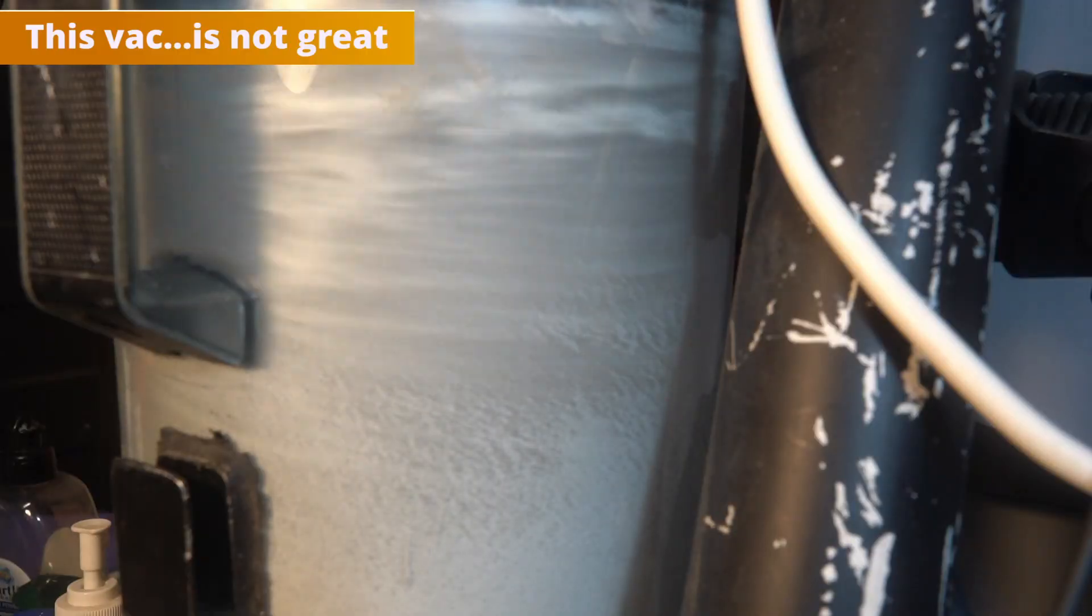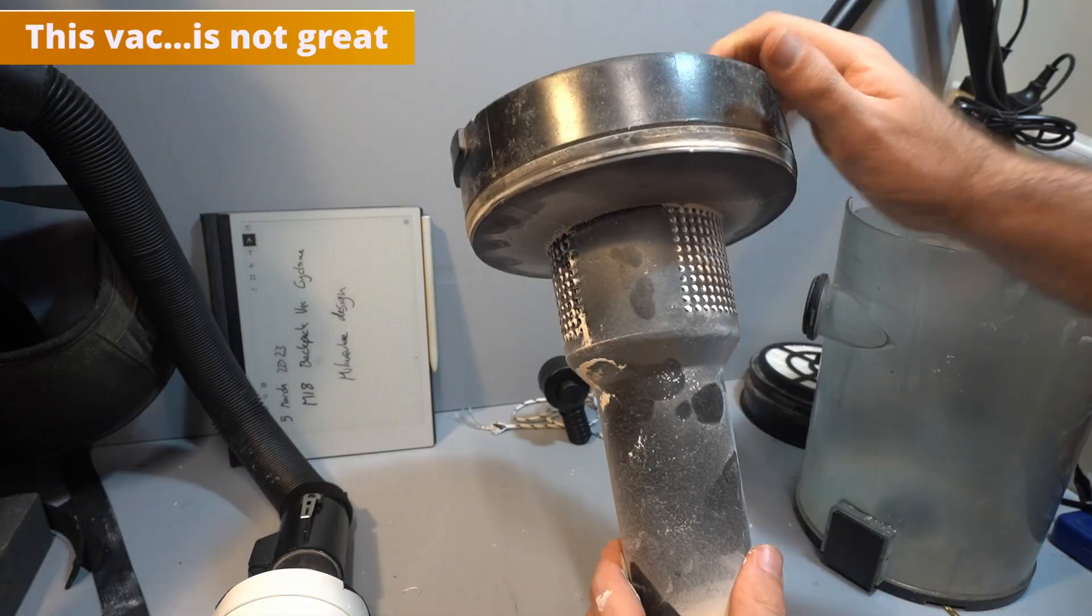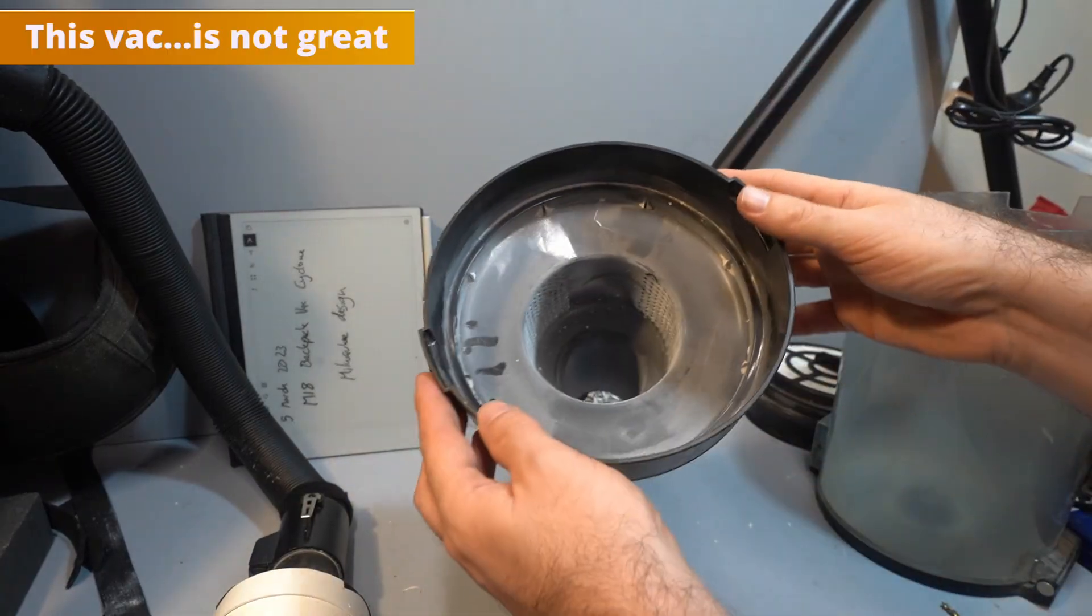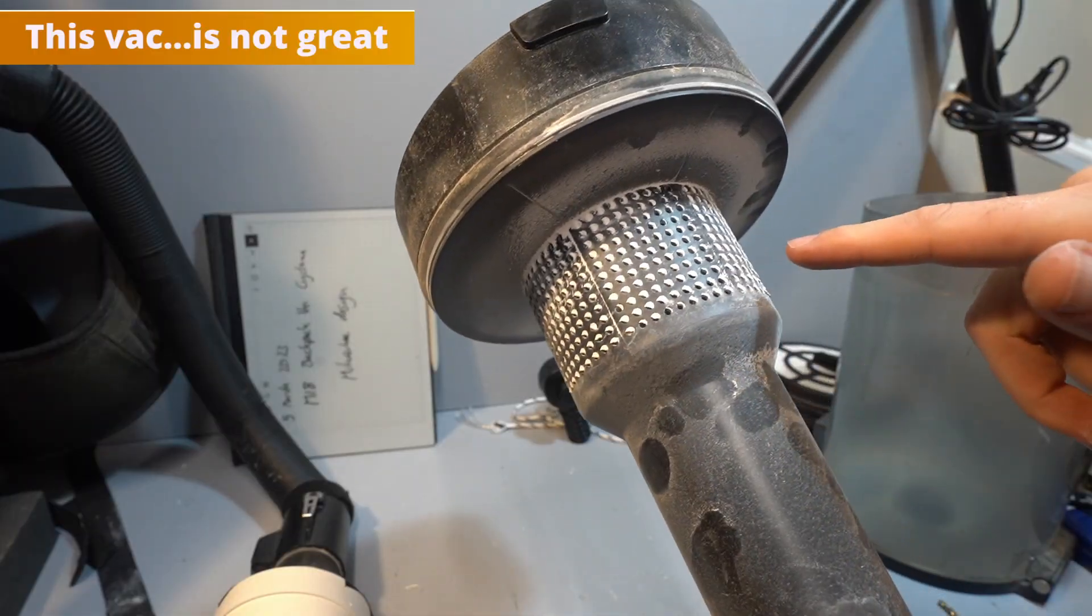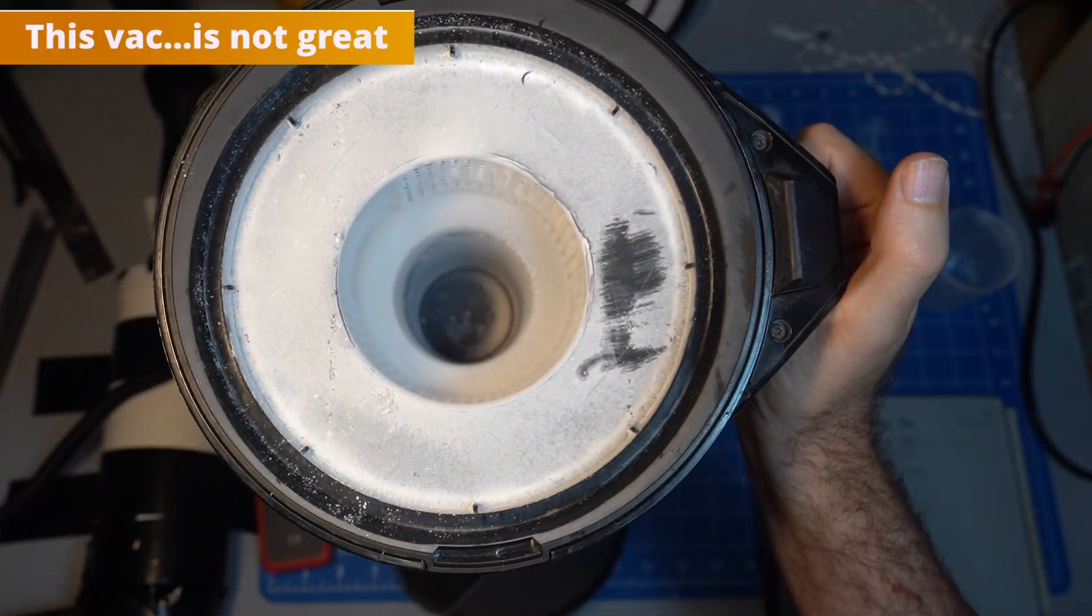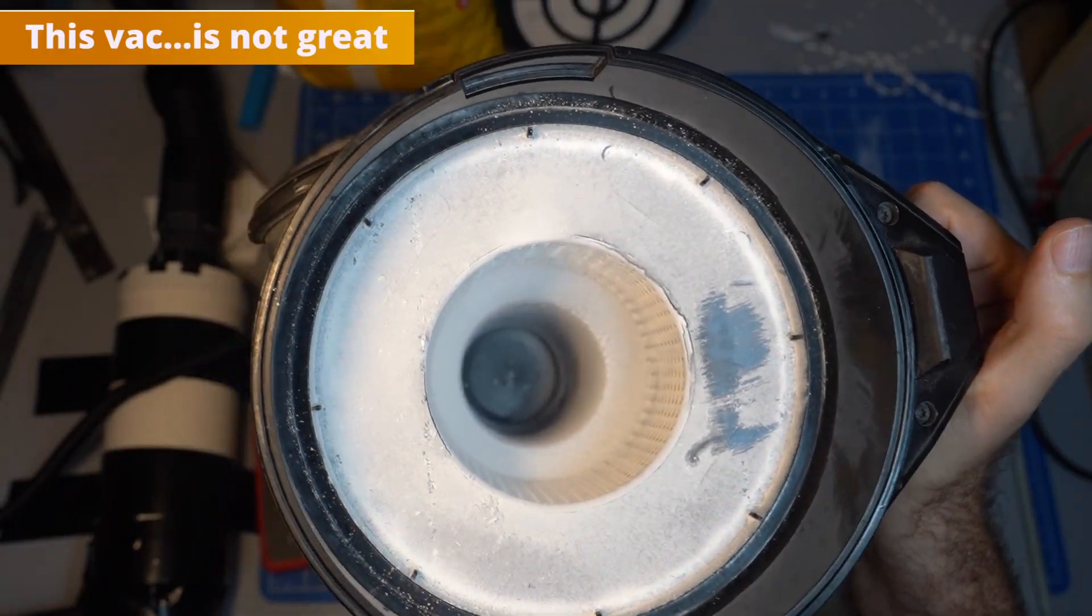The outer part is somewhat cyclonic but the dust is constantly disturbed meaning it can end up in the filter. This inner cone looks like a cyclone from the outside but there is no top so any dust that goes through these holes goes straight up and into the filter. There is almost never any dust at the bottom of this inner cone so it's kind of useless.